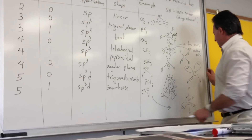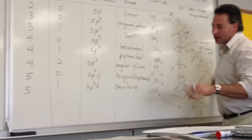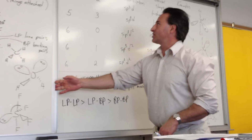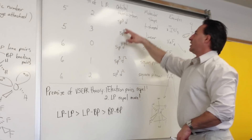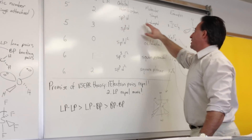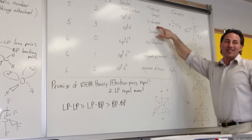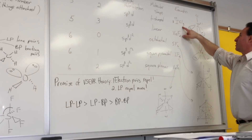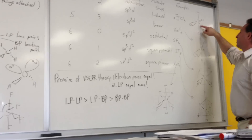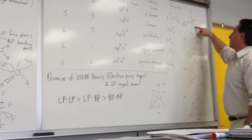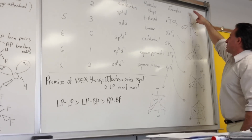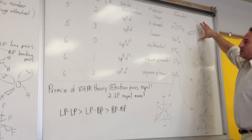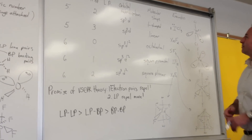The next possibility has five things attached to the central atom with two lone pairs — it's also SP3D hybridized, and the molecule ends up being T-shaped. Iodine trichloride is a T-shaped molecule. The two lone pairs end up equatorially, so you see one atom going up, one going down, and one sticking out in the middle — the molecule looks like a T.